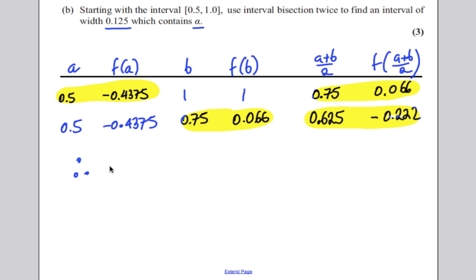Therefore, there's a root between 0.625 and 0.75, because there's a change of sign between them, and that's exactly what you wanted. You wanted a width of 0.125, which this is, and a root between there, and you've got that, so you're done in this regard.